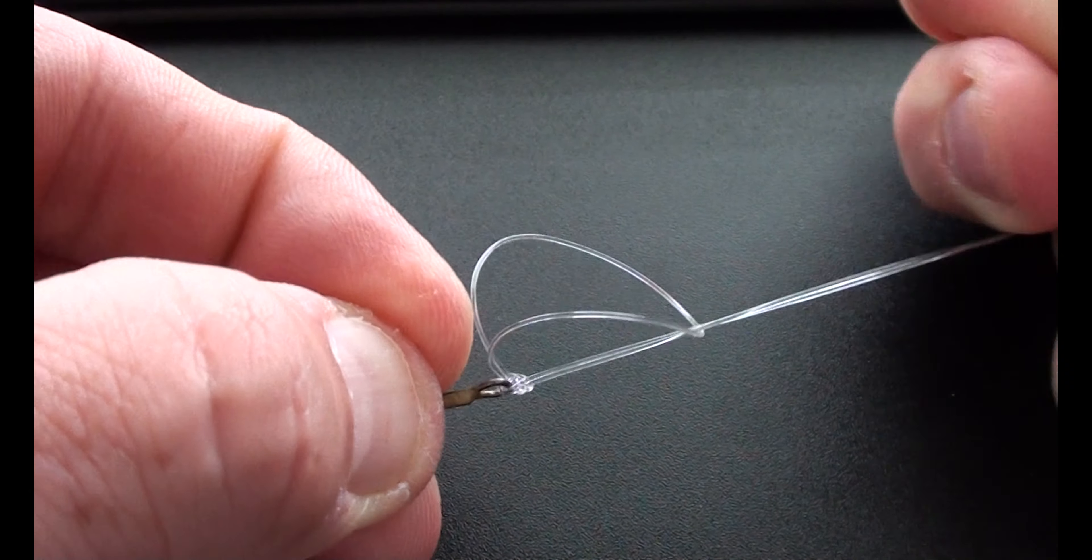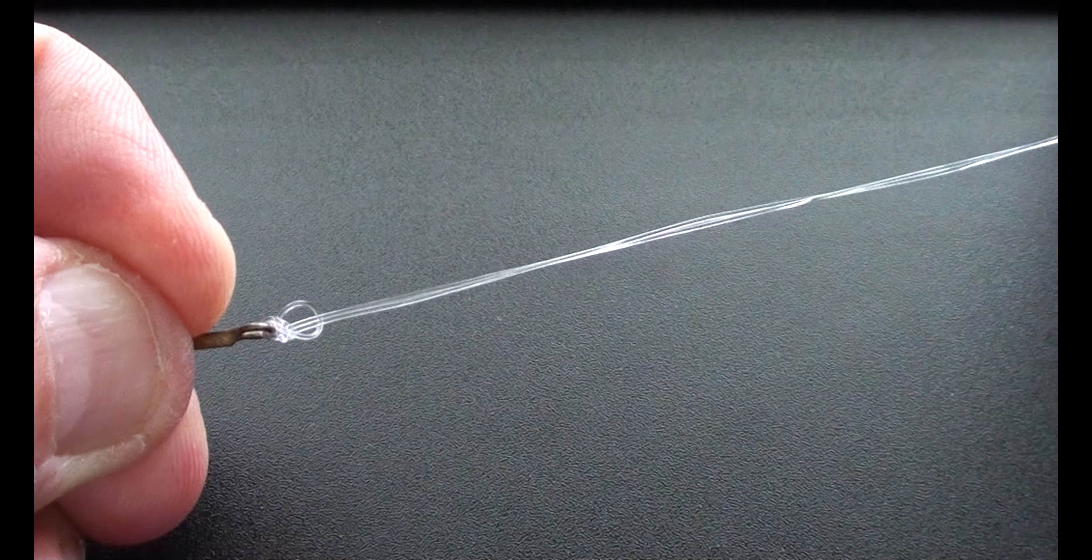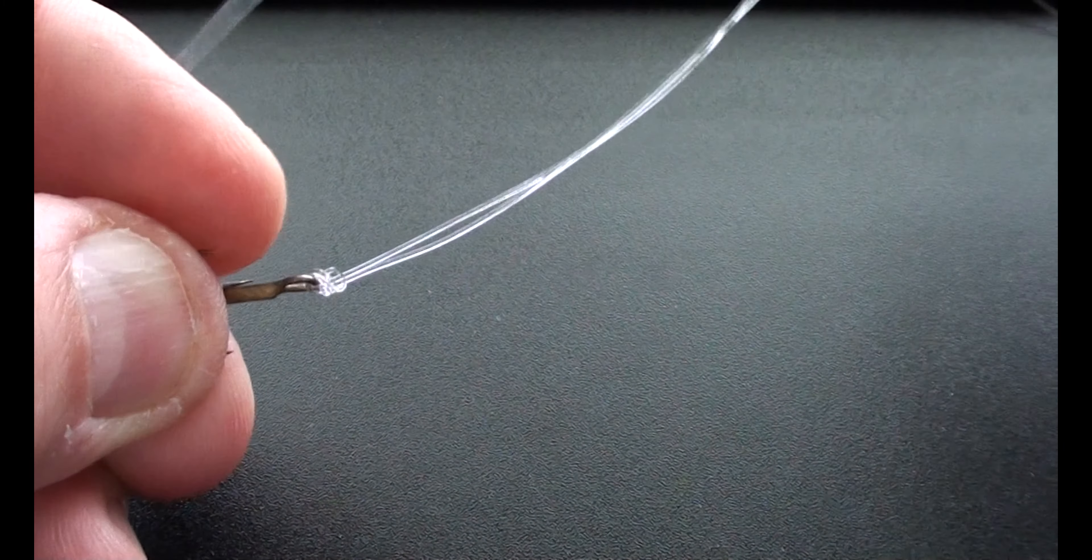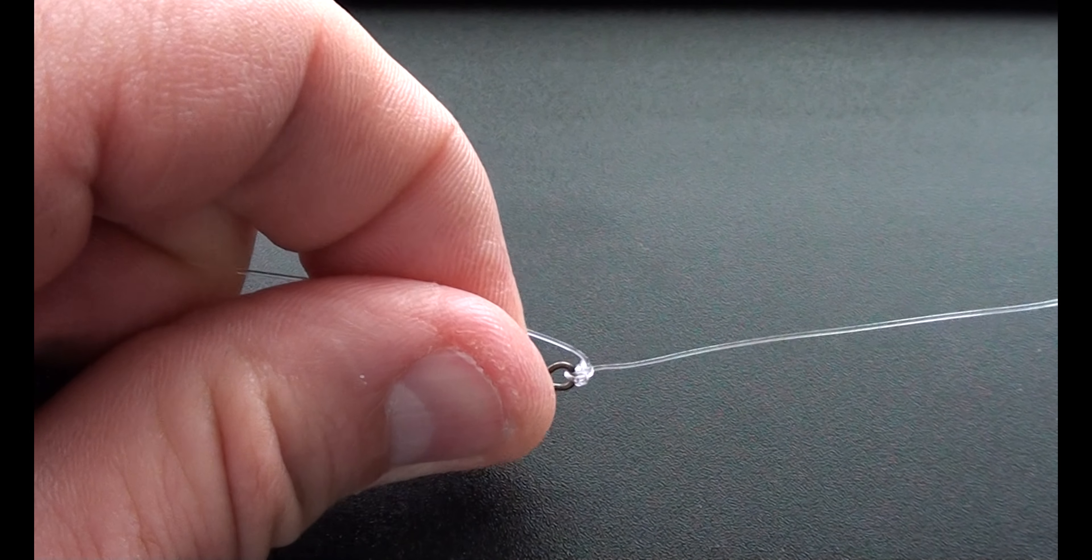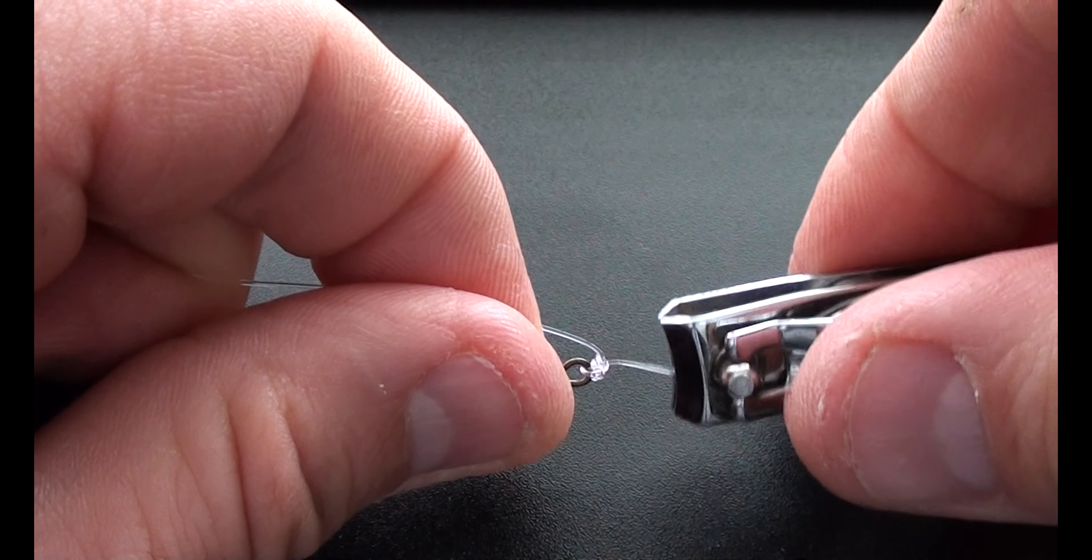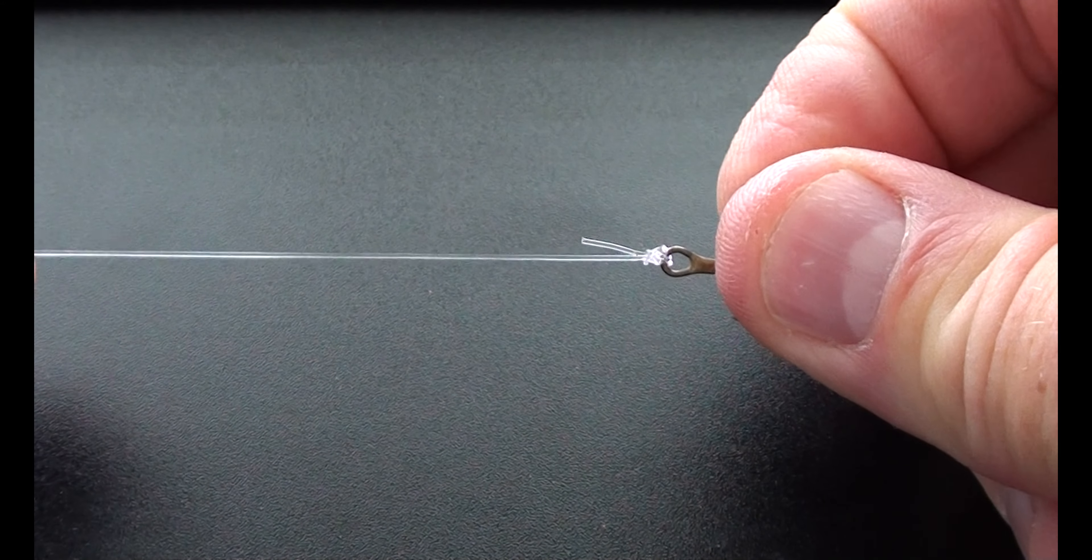Don't do what I'm doing right here though and that's cinching it down without wetting the line. Always, always wet the line before you cinch it down. Particularly with mono it will deteriorate the line and make that knot very weak if you don't. So then when you're done clip your tag end and you're ready to move on to the next step of making the loop at the other end of the stinger.